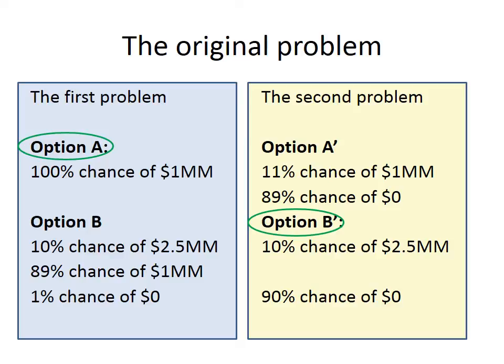Most people pick Option A on the left-hand side in the blue box, and in the right-hand side in the yellow box people pick Option B. By itself that's not a problem, except for the following argument: the problems in the blue box and the yellow box are essentially identical.